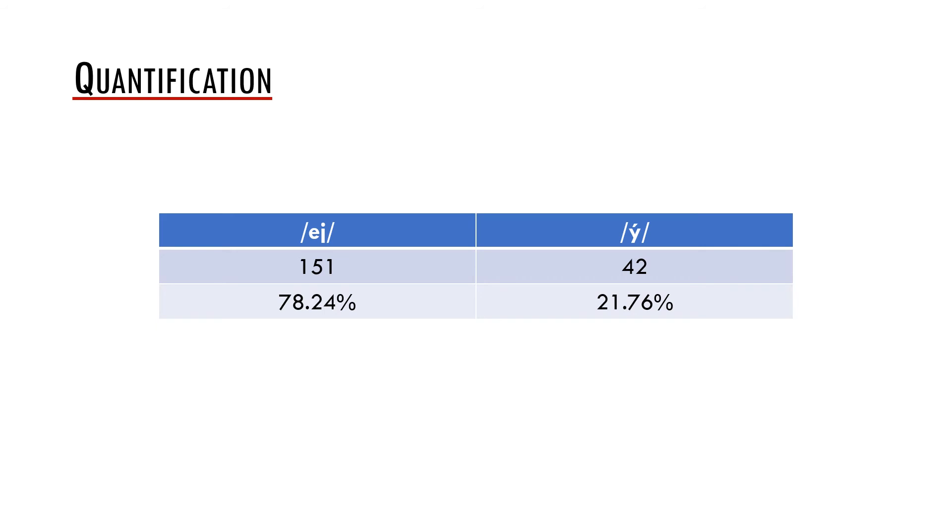We can also compute the relative frequencies and we can see that a variant occurred in 78.24% of cases and e value in 21.76% of cases. As I said, this is very simple and everyone can do it. However, imagine that you would try to analyze such a variation without this quantification, just based on some recording or a transcript. Quantification of language variation thus helps us to get a clearer picture of what is going on.